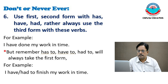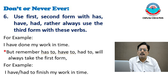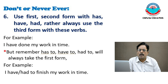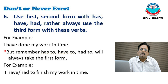The next point: never ever use the first or second form with has, have, or had. Always use the third form. For example, 'I have done my work in time' or 'he has done his work in time.' But remember: has to, have to, and had to will always take the first form — for example, 'I have or had to finish my work in time' — because it becomes an infinitive, and 'to' governs the form, making it the first form.